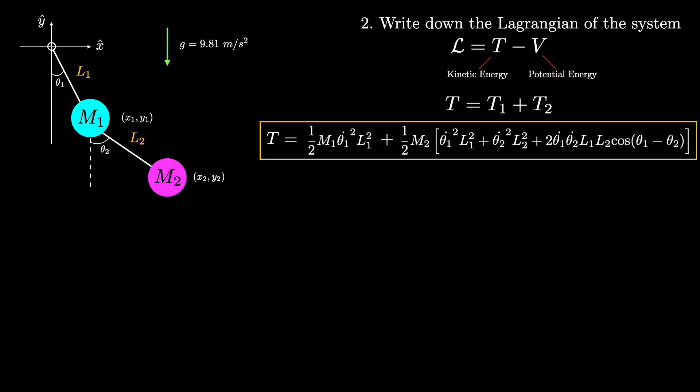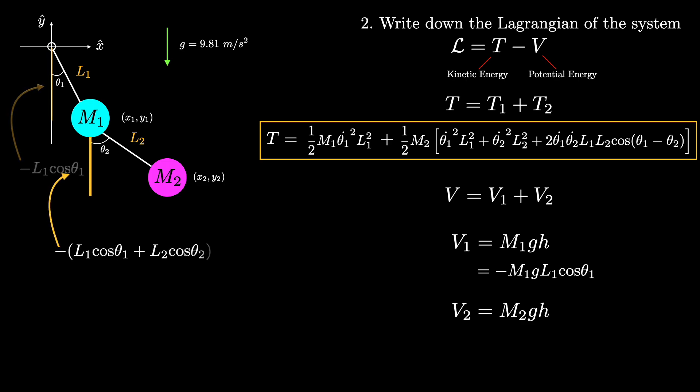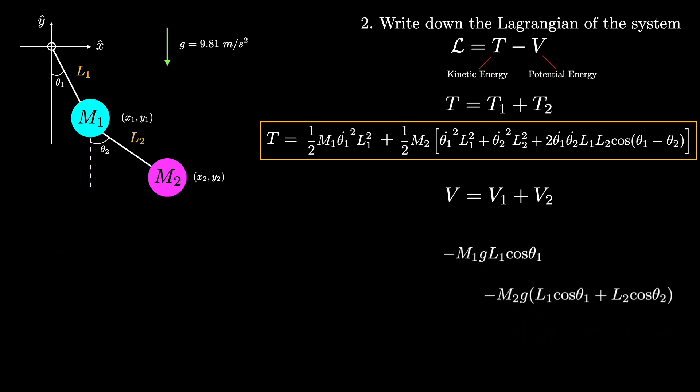Next, we need to find the potential energy. The potential energy for each particle is just mgh, where g is the gravitational constant, and h is the height above some chosen ground level. In our coordinate system, the ground level is the height of the pivot attached to L1. So the height for particle one is negative L1 times cosine theta one, which results in a potential energy of negative M1 times g times L1 cosine of theta one. And for particle two, its height is negative one times L1 cosine of theta one plus L2 cosine of theta two. So we get this expression for its potential energy, which leads to the following for the total potential energy.